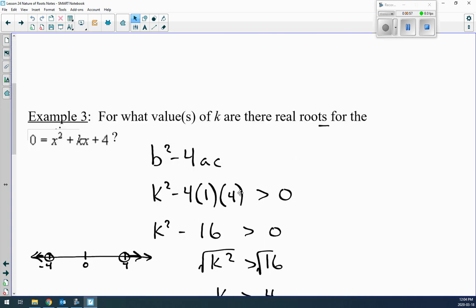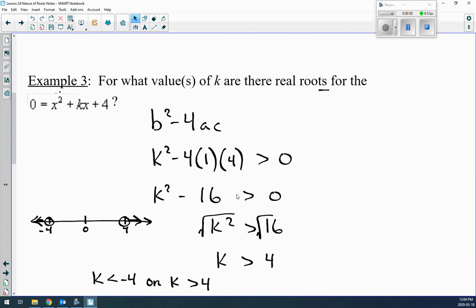So the next example is, this question asks, for what values of k are there real roots? Now, you've got to pay attention to the wording. It says roots, plural. So that means we're not looking for where it crosses at one point. We're looking for where it crosses at two points.